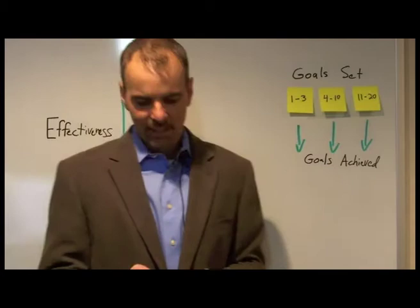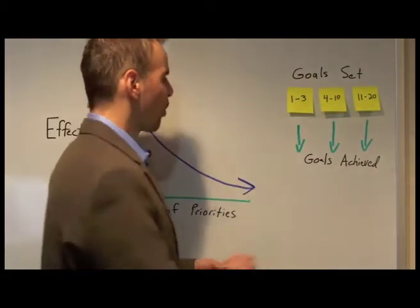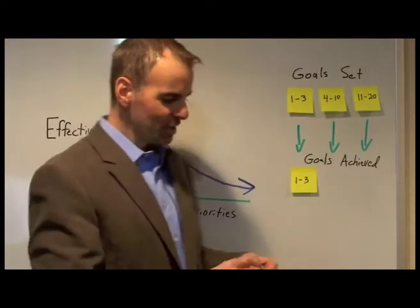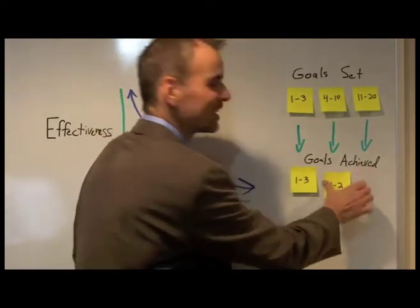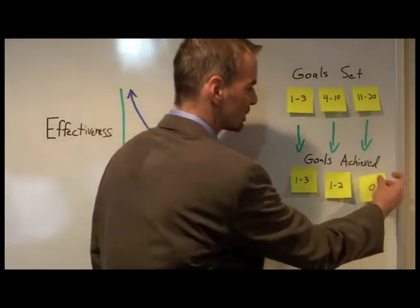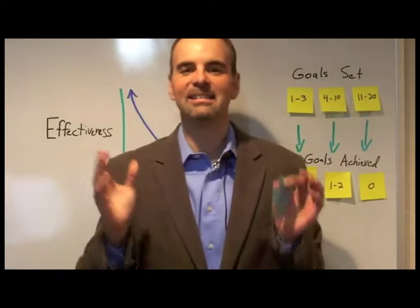If you aim for one to three goals, you'll achieve one to three of them. If you aim for four to ten goals, you'll achieve only one or two. You'll be going backward. And worse, if you aim for eleven to twenty goals, you'll achieve exactly zero.